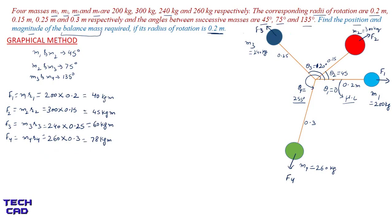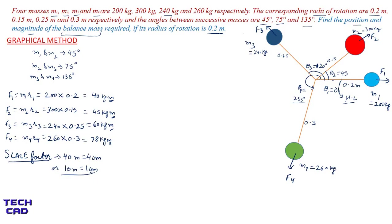After finding out the magnitudes, you have to make the vector diagram of the forces. To draw it you need a scale factor, since the magnitudes are in meters and cannot be drawn at full size on an A4 page. The scale factor is 10 meters = 1 centimeter. So F1 becomes 4 cm, F2 becomes 4.5 cm, F3 becomes 6 cm, and F4 becomes 7.8 cm.